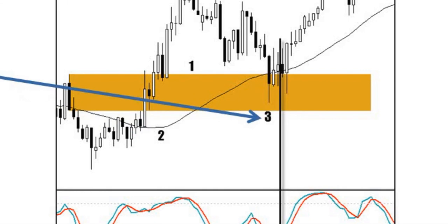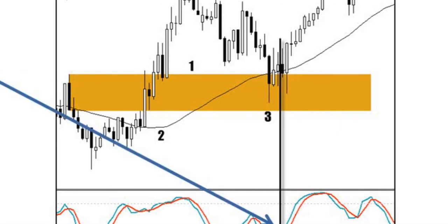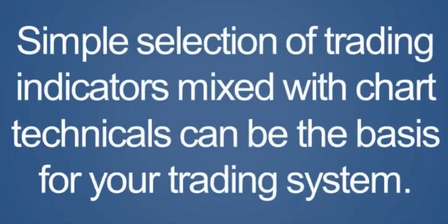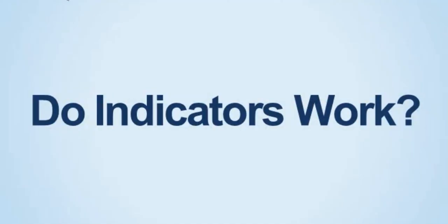Number three: price returns to the area marked number one. It's also a complex AB equals CD retrace. Number four: the momentum indicator crosses, turns up, and we buy stop the high of the candle that turned it. A simple selection of trading indicators mixed with chart technicals can be the basis for your trading system. So do indicators work? It all depends on how they're put together and the context.